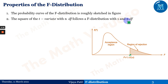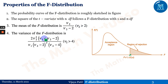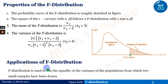The mean of the F-distribution is ν₂/(ν₂ − 2), where ν₂ is greater than 2. The variance of the F-distribution is given by a specific equation shown on the slide. The F-distribution is used to test the equality of variance of populations from which two small samples have been drawn — this is the F-test.